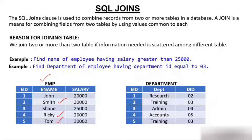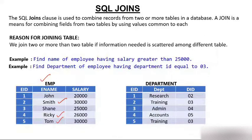Second example: find the department of employee having ID equal to 3. I need the name of the department with department ID equal to 3. Department ID 3 is 'Training.' I need only the department table — through only one table I'm getting the information, so no join is required.